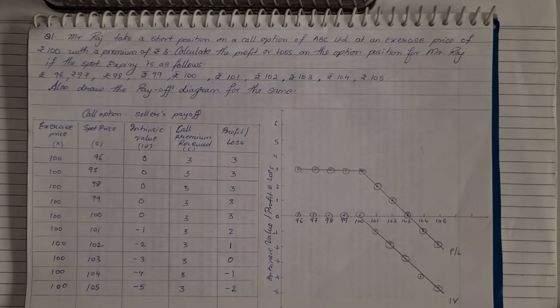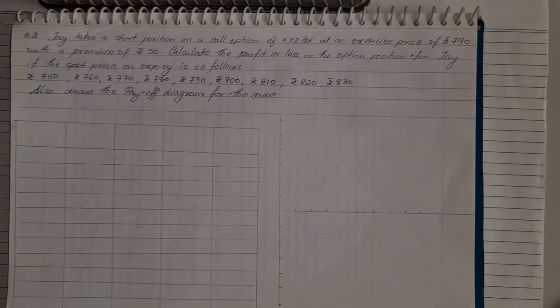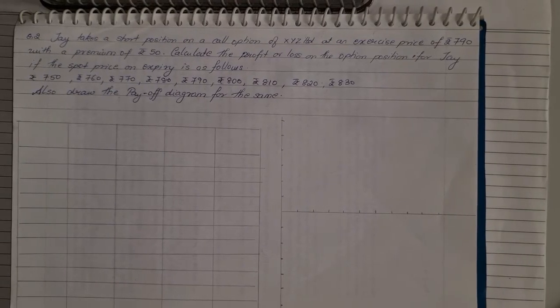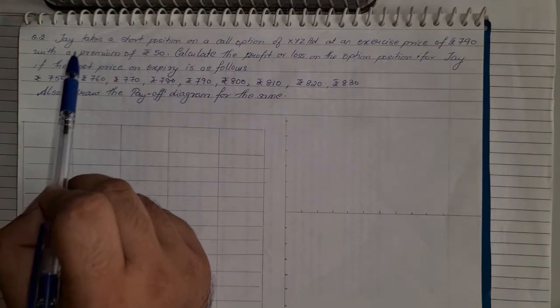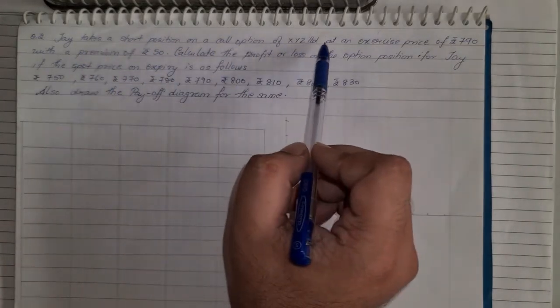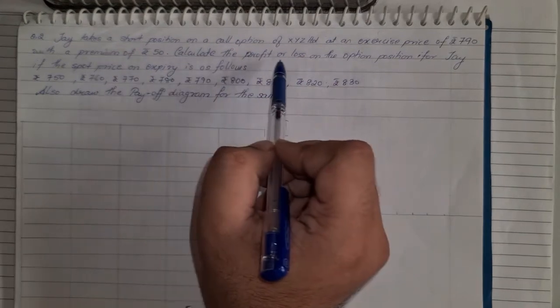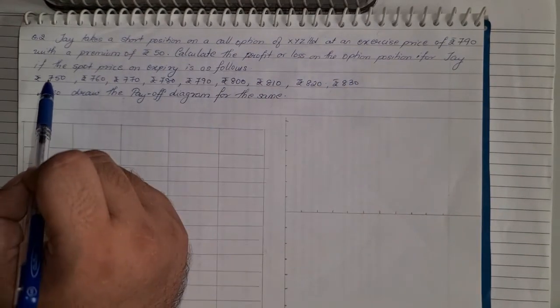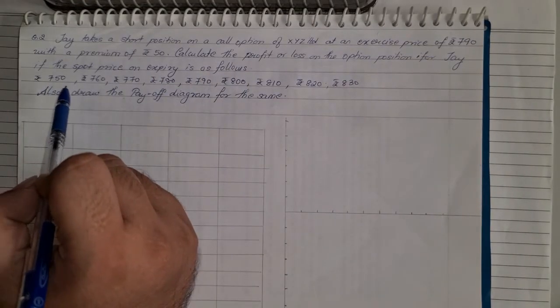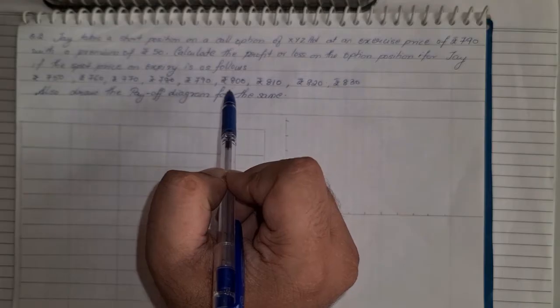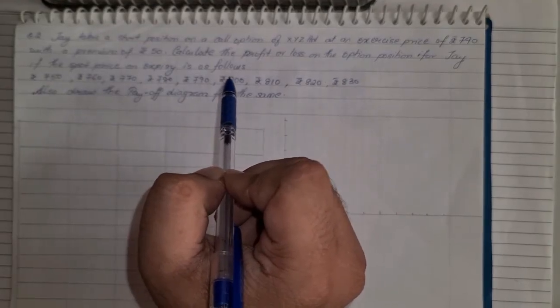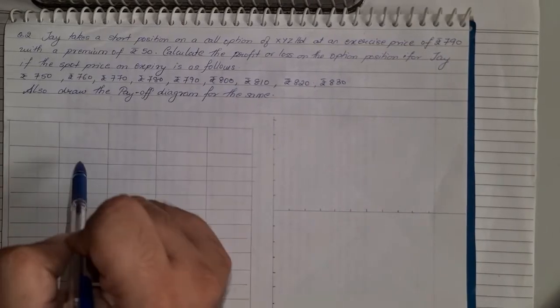That was one of the two examples we have solved. Now we will take up another example to understand the same concept of seller's payoff under call option. In the second example: Jai takes a short position on a call option of XYZ Ltd at an exercise price of Rs. 790 with a premium of Rs. 50. Calculate the profit or loss on the option position for Jai if the spot price on expiry ranges from 750 to 830. Also draw the payoff diagram for the same.